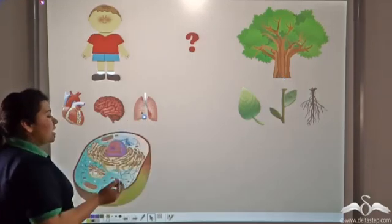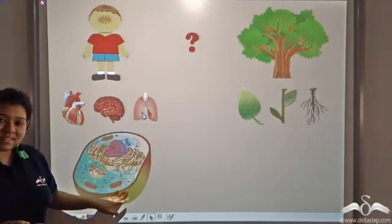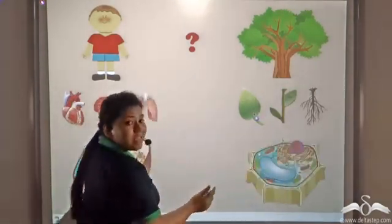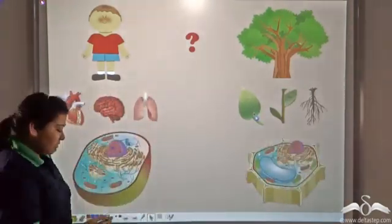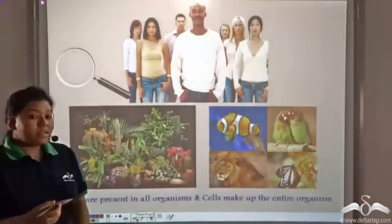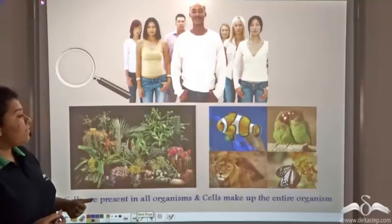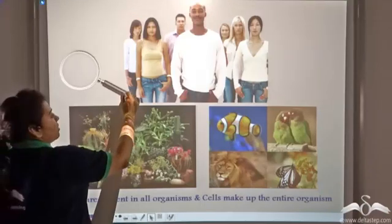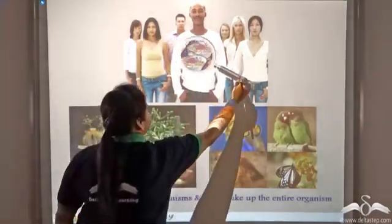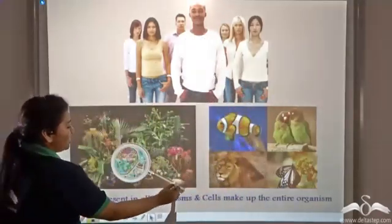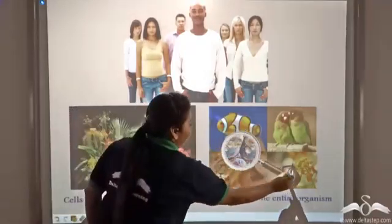So animals are made up of animal cells and plants are made up of plant cells. So cells are present in all living organisms, be it human beings, plants or animals.